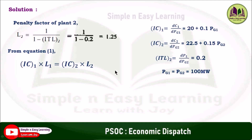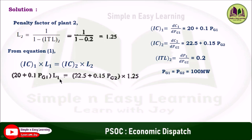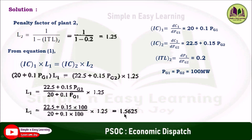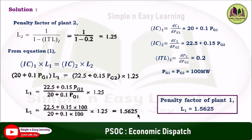IC1 and IC2 are given in the problem, and L2 = 1.25 from the previous step. The only unknown is L1. Substituting PG1 = PG2 = 100 MW into the incremental cost expressions and simplifying — bringing (20 + 0.1·PG1) to the denominator on the right-hand side — yields L1 = 1.5625. Therefore, the penalty factor of plant 1, L1, is equal to 1.5625.